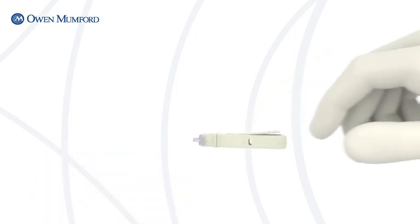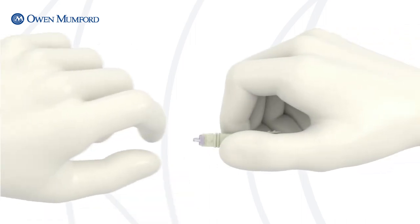To remove the sterile cap, hold the device from the sides and twist the cap a quarter turn to unlock. You'll feel the cap advance forward, but do not pull. Continue twisting until you feel it separate from the device.